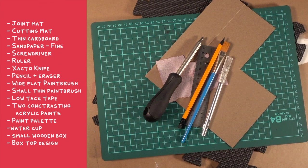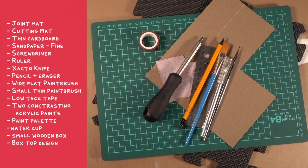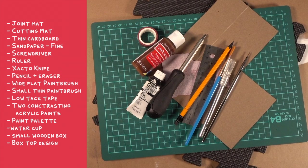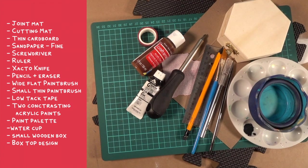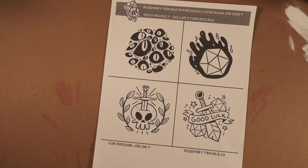Two paintbrushes, a wide flat one and a small thin one for doing designs. Some low tack tape, two contrasting colors of acrylic paint, a paint palette and water cup to rinse out your brush, and your small wooden box. So I did four different designs to pick from for this box and if you're one of my Patreon supporters you can download them to use. The link for that's in the description below if you want, but also you can design your own.